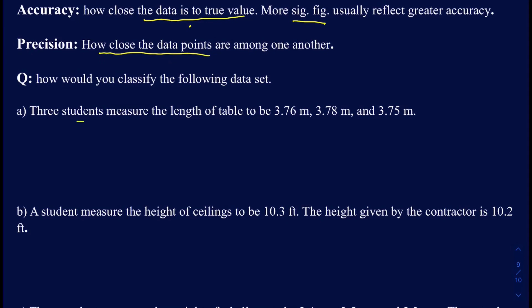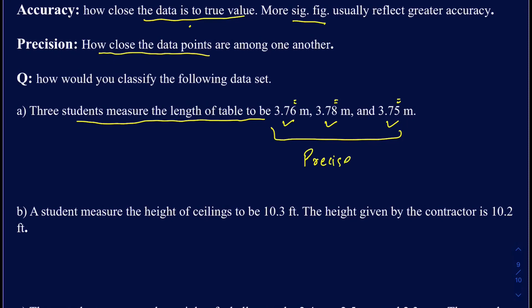Suppose three students measure the length of a table to be 3.76 meters, 3.78 meters, and 3.75 meters. They only differ by the estimated digit, so they are very close to one another — we can say they are precise. However, to determine accuracy, we need a true value, and the actual length of the table isn't given. So we can't say whether the data is accurate or not — we just don't have enough information. It is precise, but we can't confirm accuracy.